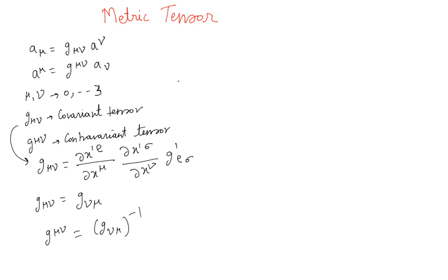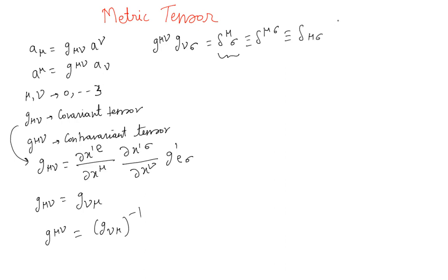These properties can be derived, though I probably won't derive them in this lesson. There is one more important property: G^mu_nu times G_mu_sigma equals the Kronecker delta delta^nu_sigma, which we already know. In matrix form this is equivalent to the identity matrix — equal to 1 when indices match, and 0 when they differ.